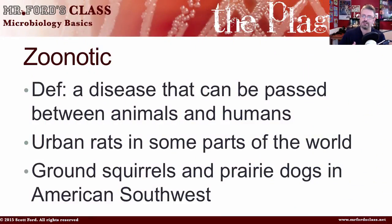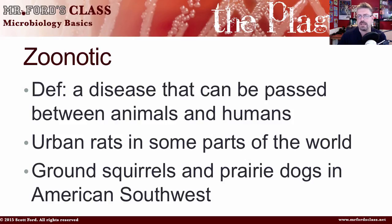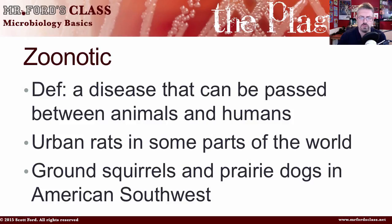Yersinia pestis is considered a zoonotic disease, meaning it's a disease that can be passed between animals and humans. More recently, we've had things like bird flu and swine flu — those are examples of diseases that can pass the species barrier between an animal and a human. The plague, Yersinia pestis, can infect both animals and humans.